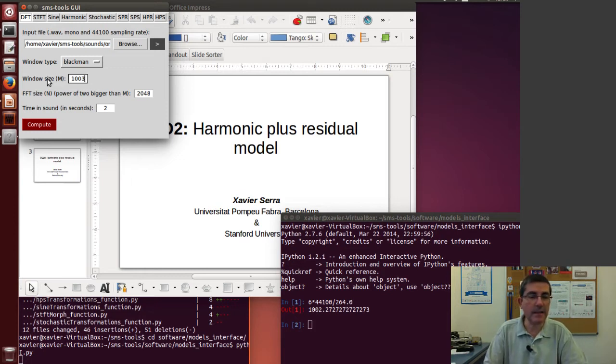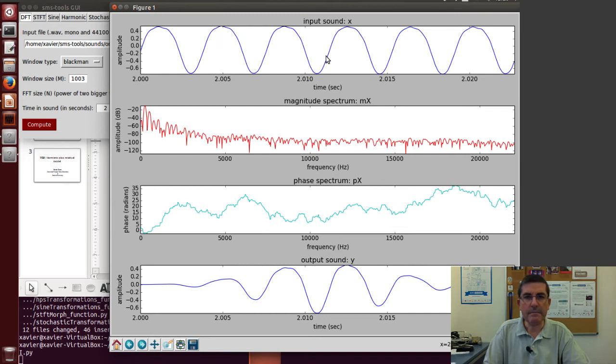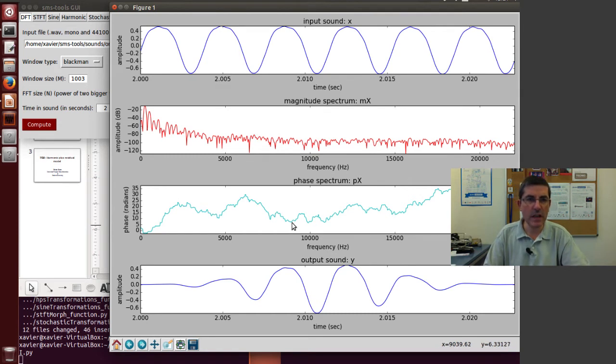Let's put 1003 to make it an odd window and use a 2048 FFT size with quite a bit of zero padding. Let's compute it. Okay, so we're analyzing six periods of the sound. It clearly looks very sinusoidal. From the magnitude spectrum, we see there aren't that many clear harmonics, even though there's quite a bit of energy in the high frequency range. This is an indication that the sound has quite a bit of a stochastic component.